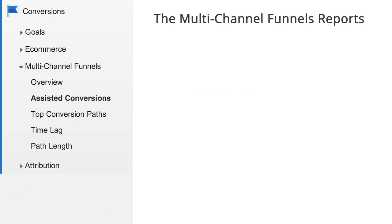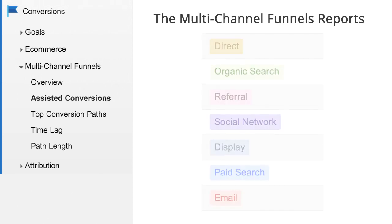Conversion path data includes interactions with virtually all digital channels. Google Analytics will automatically create channel groups such as direct, organic and paid search, referral sites, social networks, display advertising, and email. It is highly recommended that you customize the default channels to better align with your marketing activities.